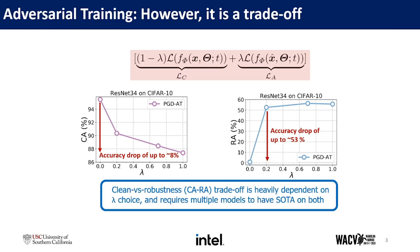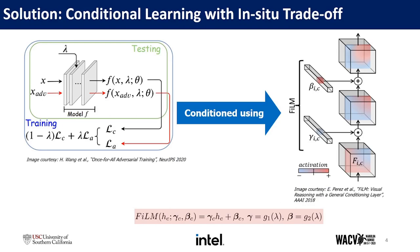To mitigate such issues, recent works have proposed conditional learning for robust models that essentially trains a model once and allows inference-time in-situ trade-off between accuracy and robustness. In particular, a single model can yield a test-time accuracy of 95% on clean data as well as robust accuracy of 55% on adversarial examples, upon selection of two different values of the test-time lambda.